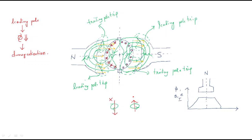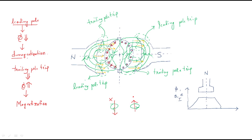Demagnetization occurs at the leading pole tip. At the trailing pole tip, the flux increases, and this process is called magnetization. So at the leading pole tip flux decreases (demagnetization), and at the trailing pole tip flux increases (magnetization).